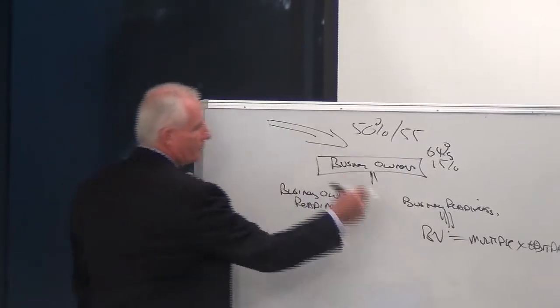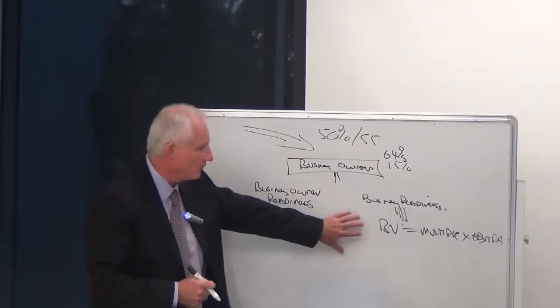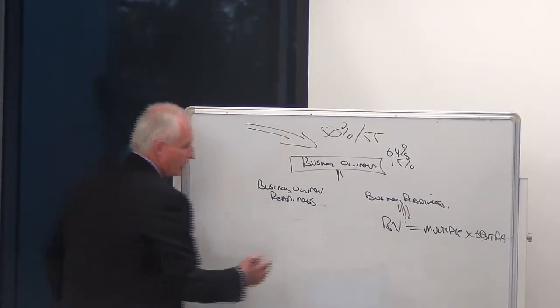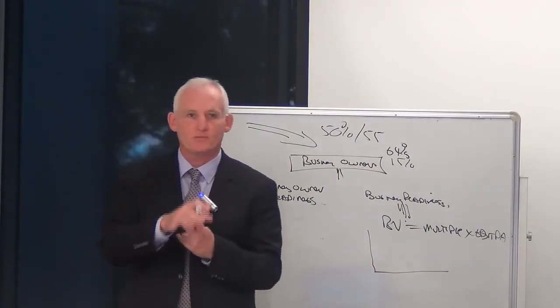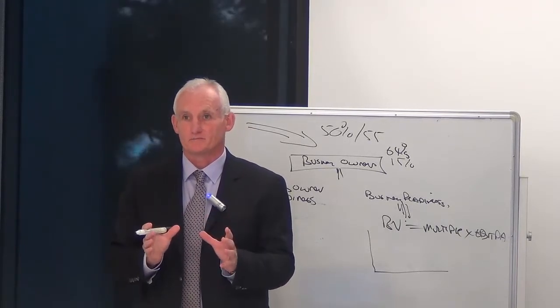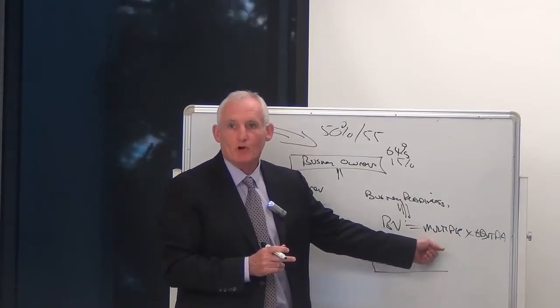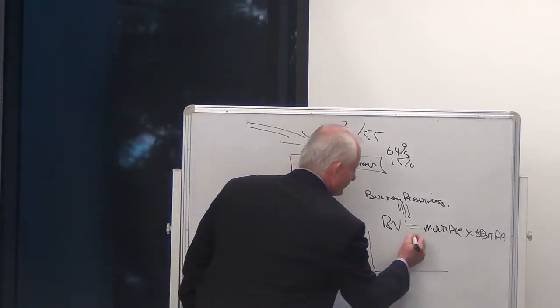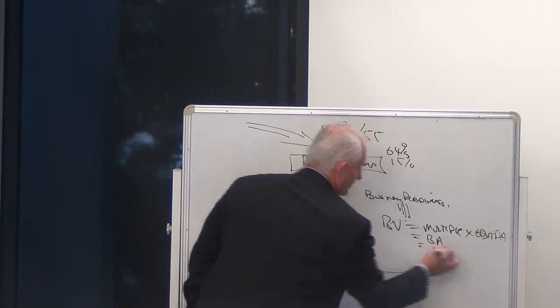We need to help the business owner go through a readiness phase. The first thing we need to do is understand what business value is all about. So the first thing is an education process. Our education process is first to go down and talk about two parameters on the business value side. We're going to change this multiple and we think about multiple is risk.